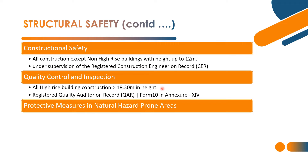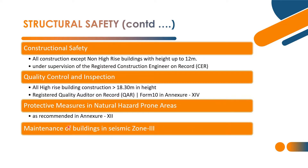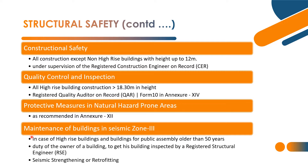Next is protective measures in natural hazard prone areas. This will be as recommended in Annexure 12. Next is maintenance of buildings in seismic zone 3. In case of high-rise buildings and buildings for public assembly older than 50 years, maintenance for seismic zone 3 is required.